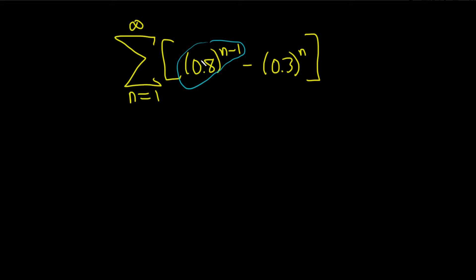So if it was just this it would be geometric, likewise if it was just this it would also be geometric. So what we can do in this problem is we can break it up into two separate infinite sums.